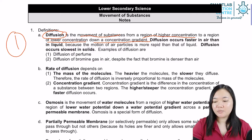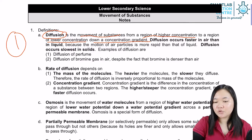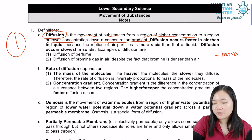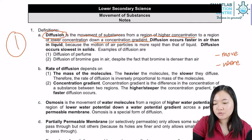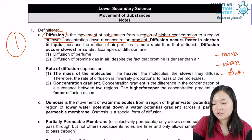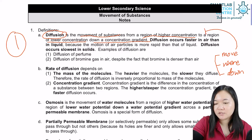The definition can be broken down into three smaller parts. First, movement of substances. Second, the region from where to where — from a region of higher concentration to a region of lower concentration. And third, down the concentration gradient. Remember these three points; they will help you with your definition.